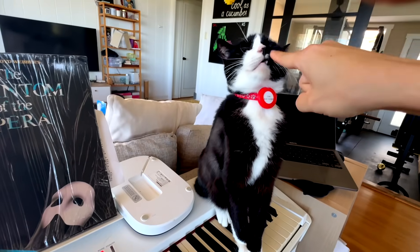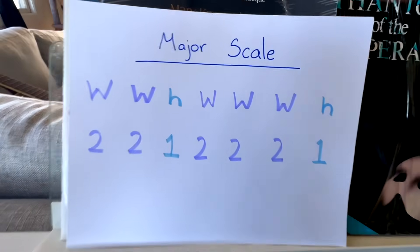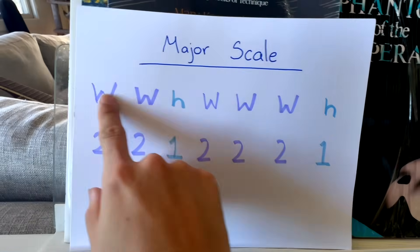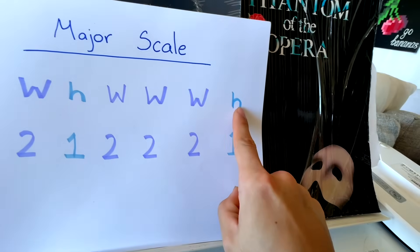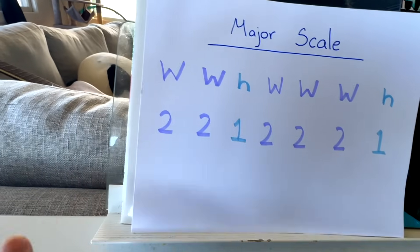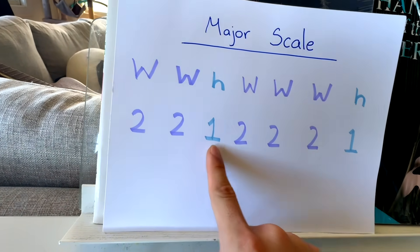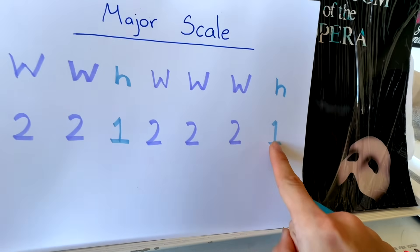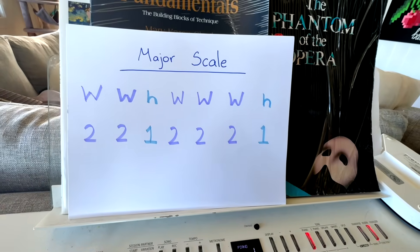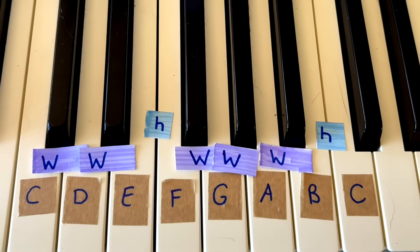Whole steps and half steps are what we call intervals. If we wanted to create a major scale, all we have to do is start on any note and then use the following intervals: whole, whole, half, whole, whole, whole, half. Or if we're talking about the distance between notes, it would be start on any note and then go two notes away, then two notes away, then one note away, then two, two, two, and one. If you do that, you can make a major scale on any pitch, and that's what gives the major scale its characteristic sound.